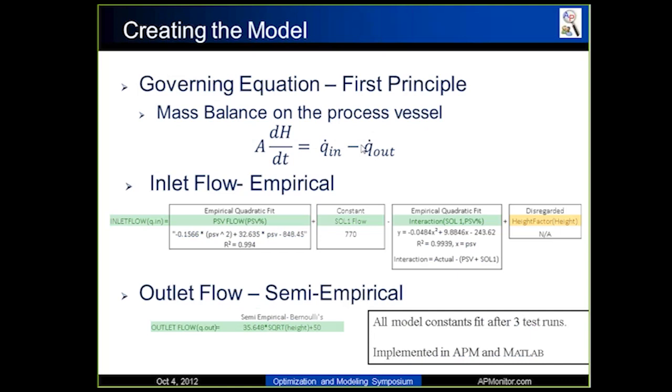However, the Q_in and the Q_out comes from a lot of empirical relationships. So the inlet flow is strictly an empirical relationship that I had to basically determine: how do you determine what the inlet flow is based upon whether the discrete valve is on and whether the proportional valve is on. It's basically got three terms in it. One is an empirical quadratic set, which basically will give you the flow based upon how much the PSV is open, whether it's 100%, 80%, or 90%. And then SOL1 flow is just a constant because if you turn it on, it's always going to be that specific flow rate.